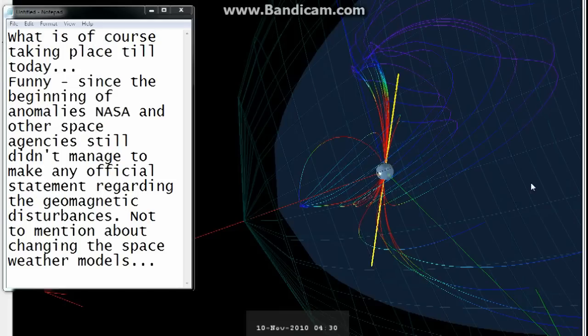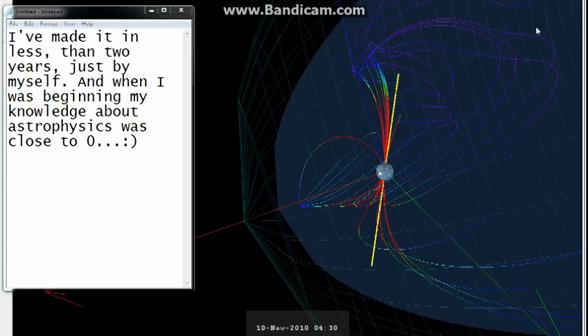Funny. Since the beginning of anomalies, NASA and other space agencies still didn't manage to make any official statement regarding the geomagnetic disturbances, not to mention about changing the space weather models. I've made it in less than two years, just by myself. And when I was beginning, my knowledge about astrophysics was close to zero.